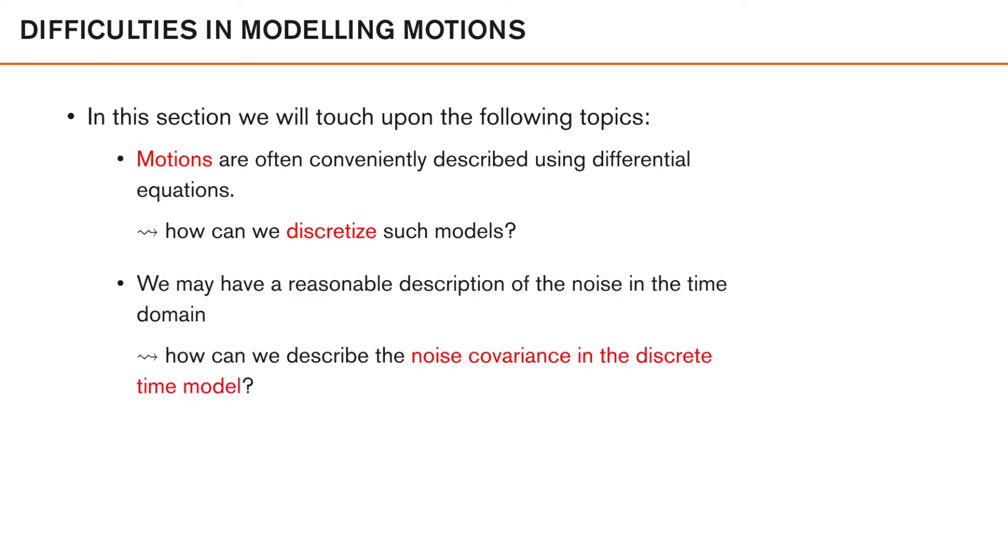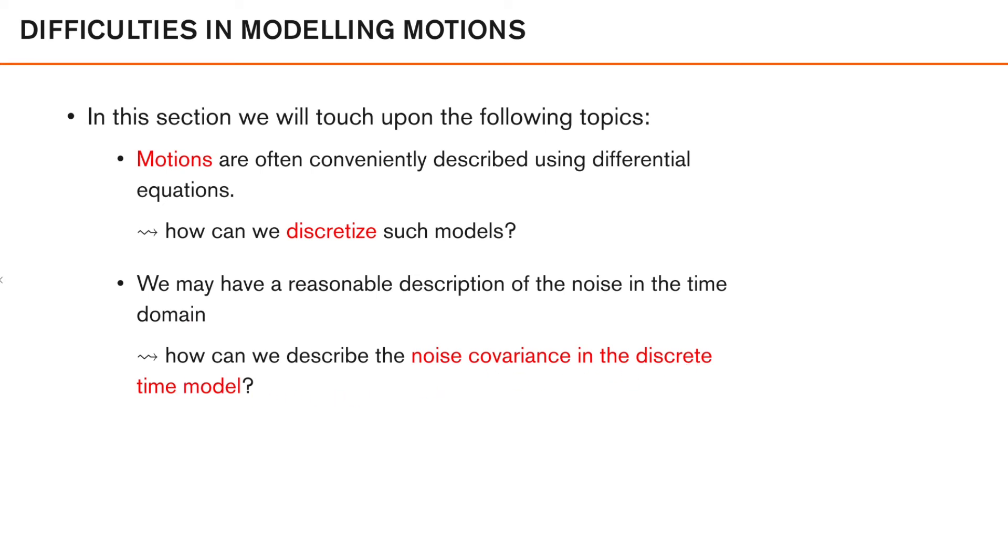Whereas the first aspect focuses on the deterministic, or physical part of the motion, the second aspect that we are going to discuss relates to the motion noise. So if we have a reasonable description of the noise in the time domain, how can we relate this to the noise covariance in the discrete time model?